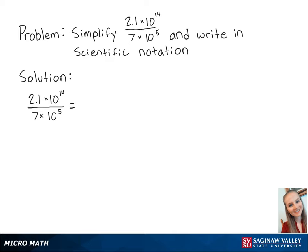For this problem, we're going to simplify 2.1 times 10 to the 14th over 7 times 10 to the 5th, and we're going to write this in scientific notation.